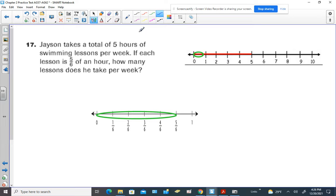Hey everybody, we're looking at number 17. Jayson takes a total of five hours of swimming lessons per week. If each lesson is five-sixths of an hour, how many lessons does he take per week?